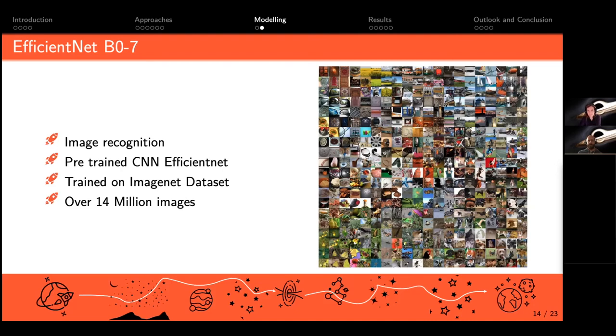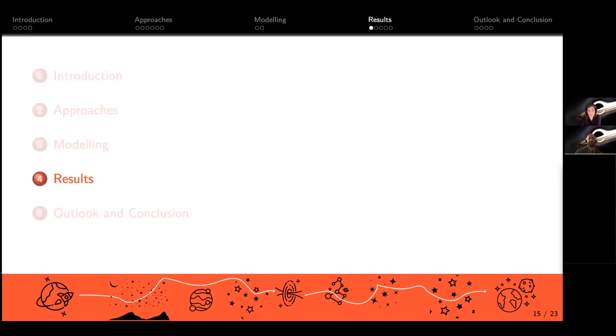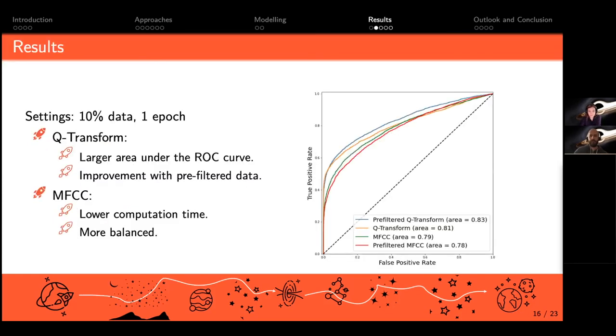Now since we are done with the modeling, we can carry on with our results. Because we had such a huge dataset, our first calculation used only 10 percent of the data and calculated only one epoch. That should already give us a hint which approach is good and which not.